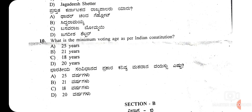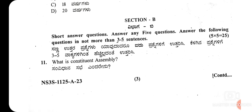The last question — question 10 — in the objective section is: what is the minimum voting age as per the Indian Constitution? As we know, once you are 18 years of age, you are eligible to vote as per the Indian Constitution. The minimum voting age is option C — 18 years. This is all about Section A; coming to Section B.